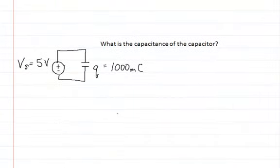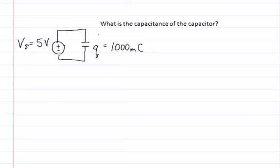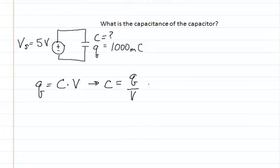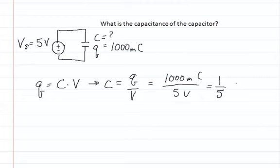Now for the second problem, we're going to solve for capacitance. We don't know what the capacitance is, but we know the voltage and the charge. We manipulate the equation — charge equals capacitance times voltage — to get: capacitance equals charge divided by voltage. Plugging in the values: 1,000 millicoulombs divided by 5 volts. Since 1,000 millicoulombs equals 1 coulomb, the capacitance is one-fifth of a farad, or 0.2 farads.